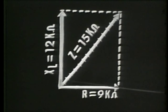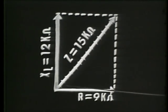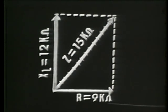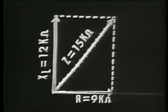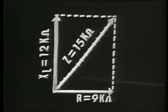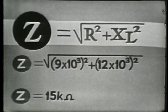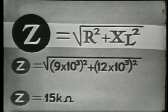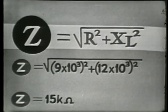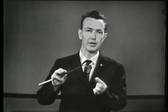We can find the hypotenuse of this right triangle if we know the values of the other two sides — which we do, because one side equals 9 K ohms and the other equals the inductive reactance 12 K ohms. Knowing these two sides, we can use the Pythagorean theorem to determine total impedance. The Pythagorean theorem states that impedance equals the square root of resistance squared plus inductive reactance squared. Substituting our values of 9 K ohms and 12 K ohms, we find that impedance equals 15 K ohms — the same value we found when we measured the impedance vector.